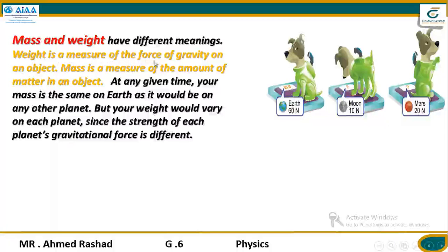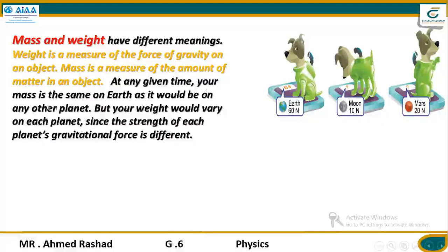Weight is the measure of the force of gravity on an object. So the weight on Earth differs from the weight on another planet because the gravity on Earth differs from that on the Moon, Mars, or elsewhere. But mass measures the amount of matter in an object and is stable — on Earth or any other planet, anywhere, the mass is stable. Weight differs from place to place due to the gravity in that place. At any given time, your mass is the same on Earth as it would be on other planets — mass is stable.